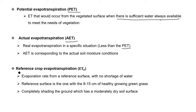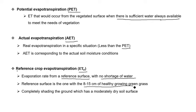To compare evapotranspiration at different places or for different crops, there is a term called reference crop evapotranspiration. It is the evapotranspiration rate from a reference surface with no shortage of water, where the reference surface is defined as one with 8 to 15 centimeters of healthy growing green grass.